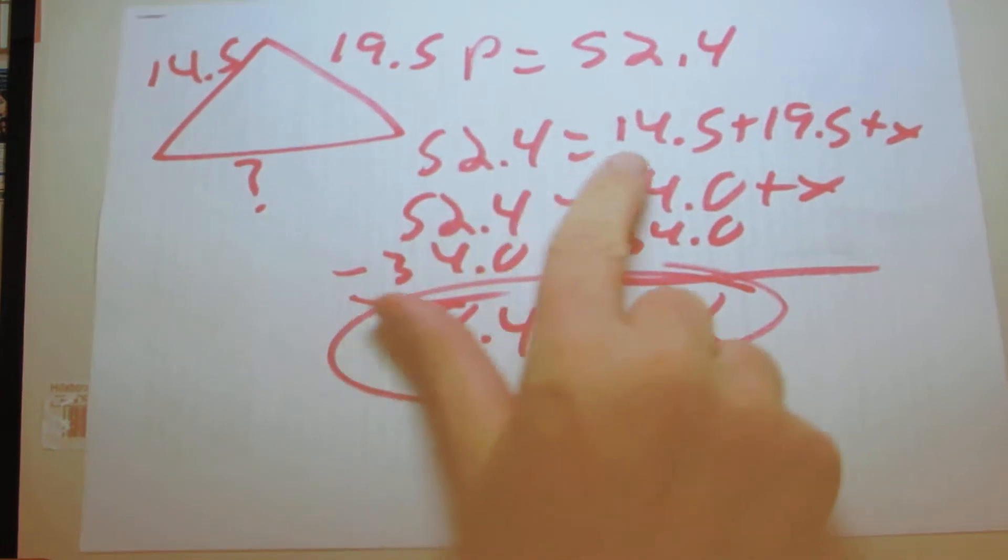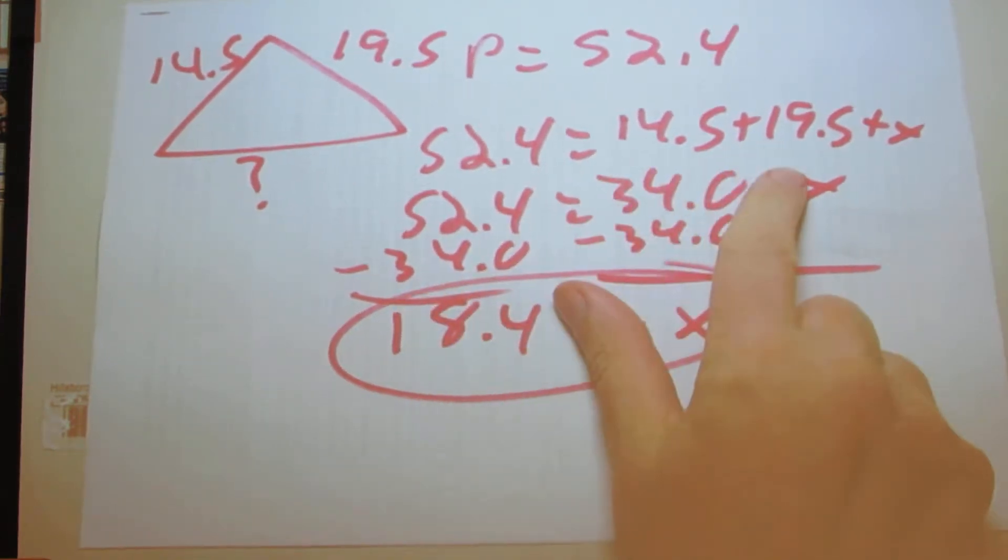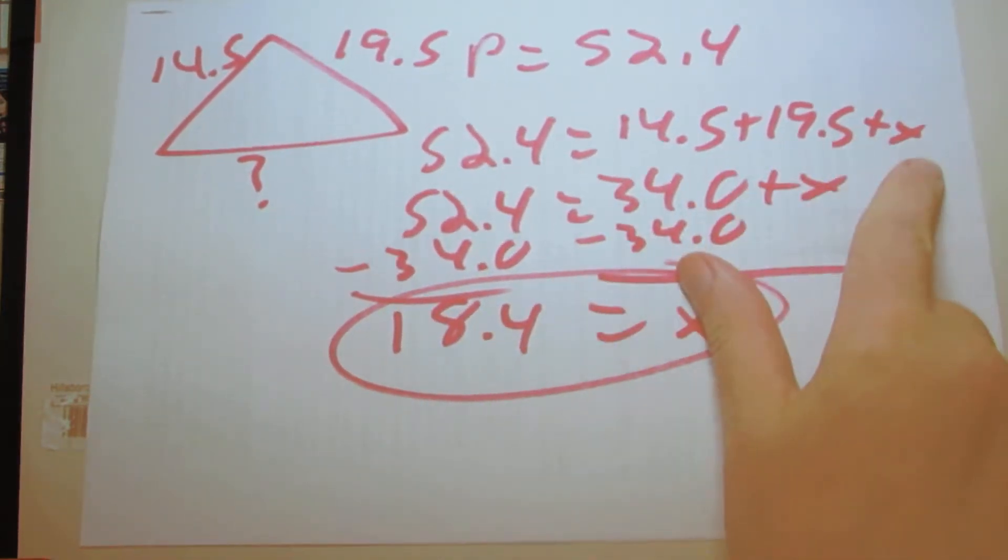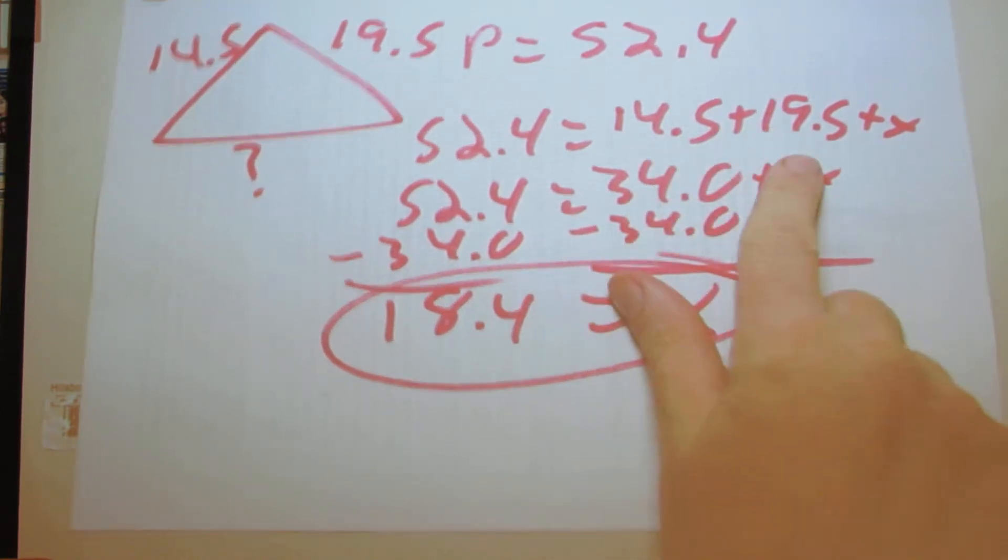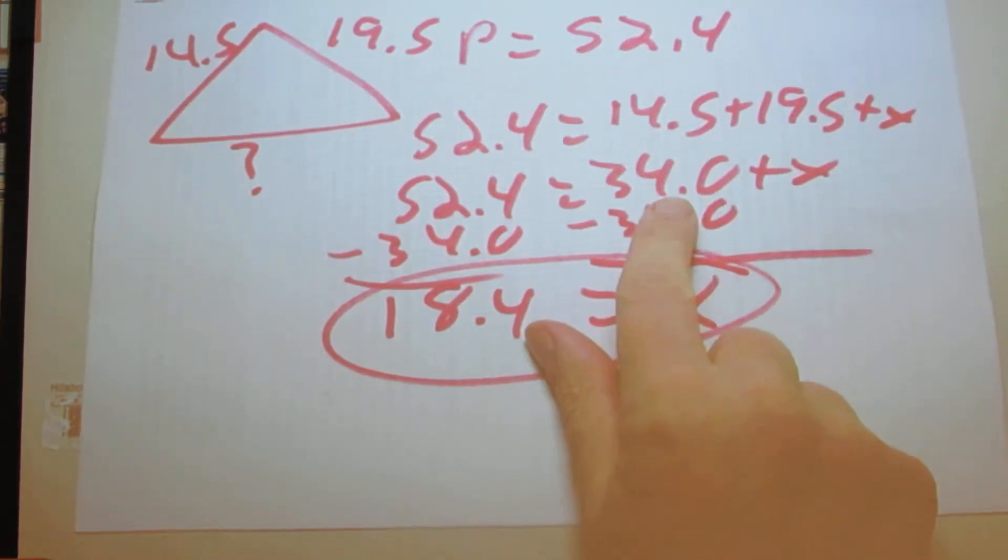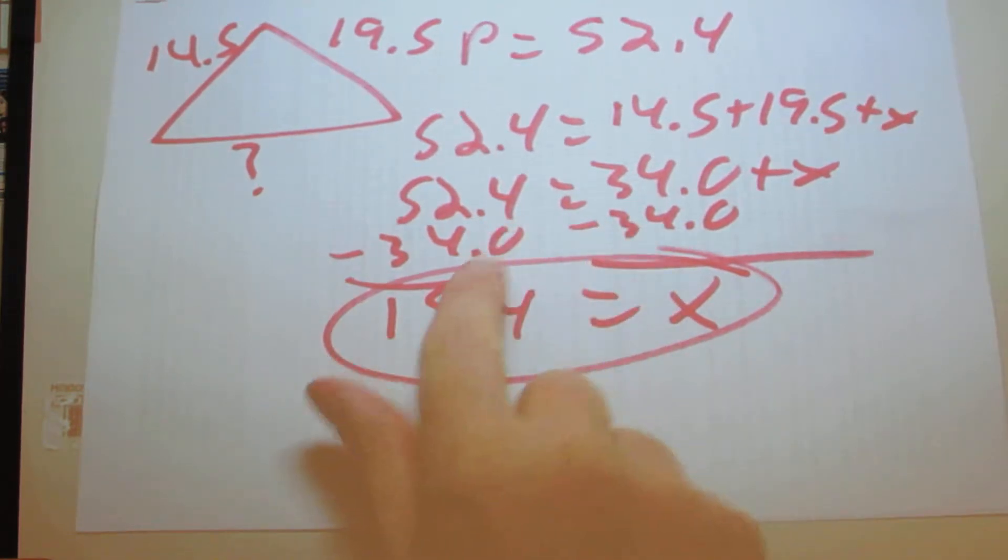So we have 52.4 equals 14.5 plus 19.5 plus x. 14.5 plus 19.5 is 34.0. Subtract 34.0 from both sides and we get 18.4 equals x.